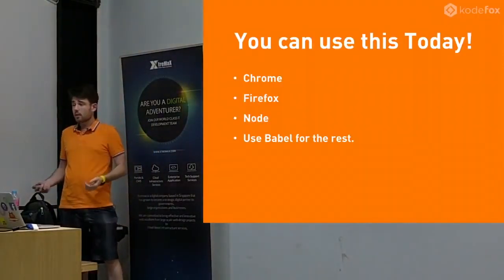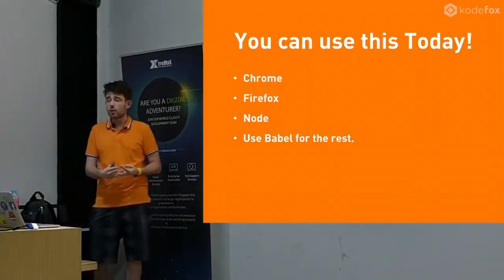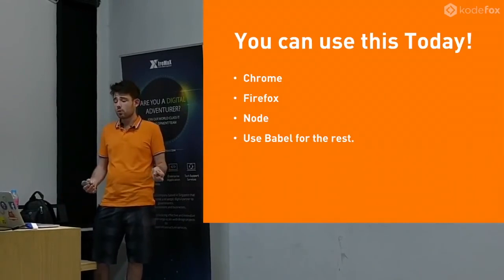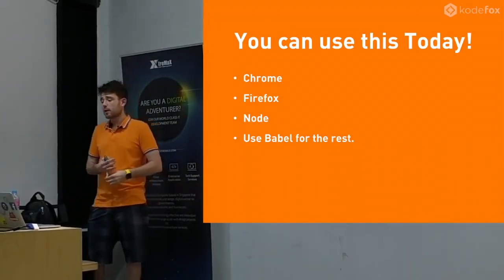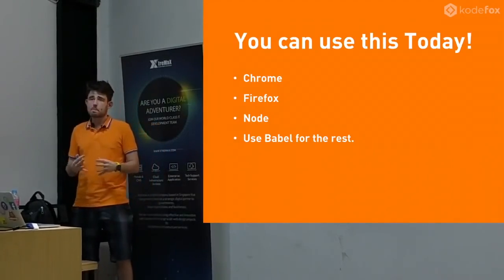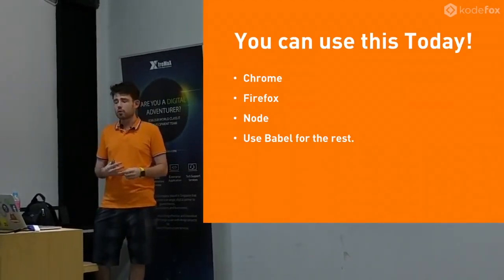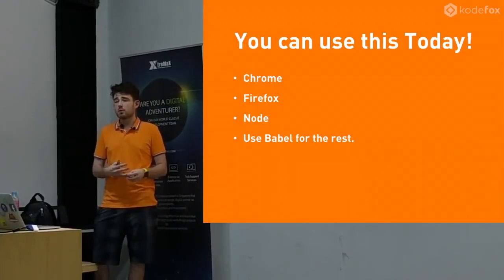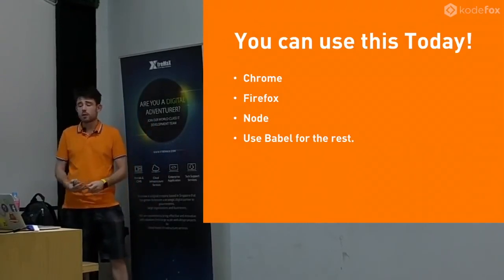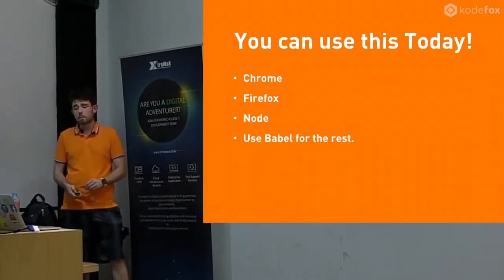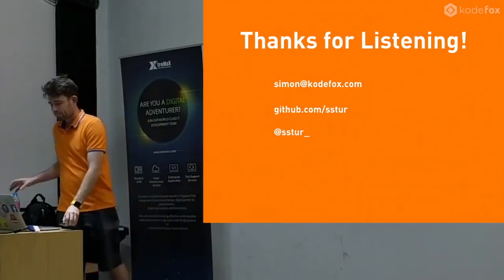You can use this today. Async/await is in Chrome, it's in Firefox, and it's in Node. For any other browsers, you should use Babel. But it's actually not that bad to use Babel because async/await is a pretty thin layer on top of just generators and promises. Most browsers support generators anyway, so there's not too much stuff that Babel needs to do to make this work. Thanks for listening.